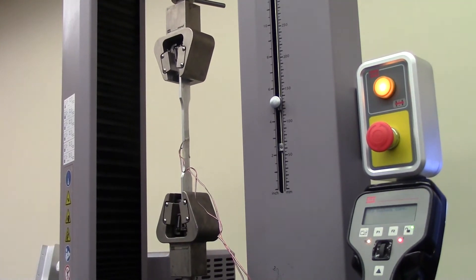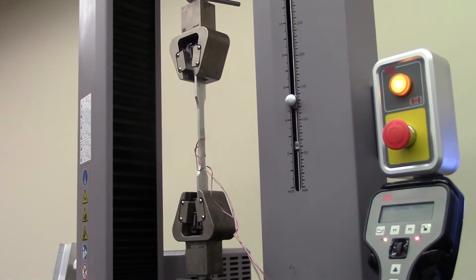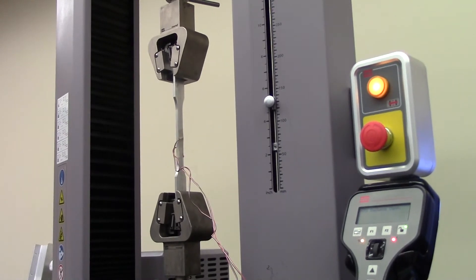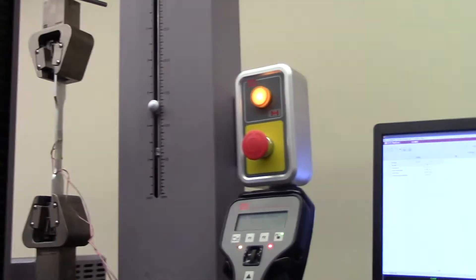All right, so now this is the Poisson ratio experiment. We've got a strain gauge bar. We have one strain gauge in the axial direction, one strain gauge in the transverse direction.